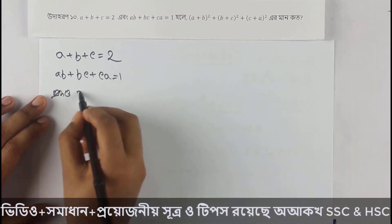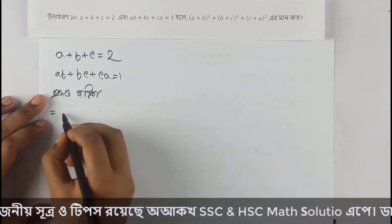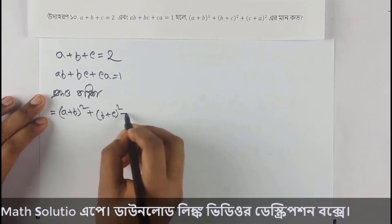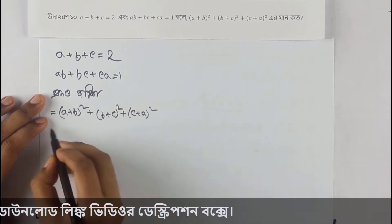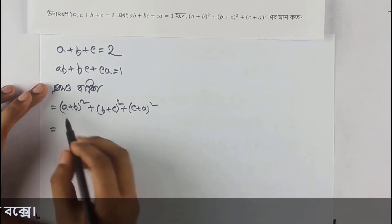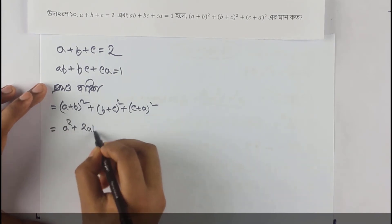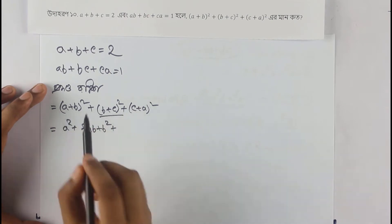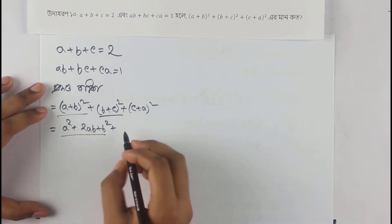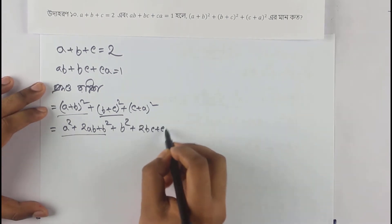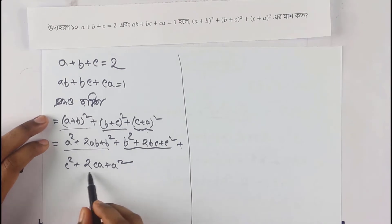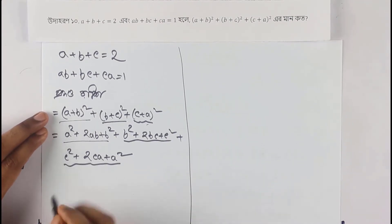The product of the terms: (a+b) whole square plus (b+c) whole square plus (c+a) whole square. Now expanding each: (a+b)² equals a² plus 2ab plus b². Then (b+c)² equals b² plus 2bc plus c². And (c+a)² equals c² plus 2ca plus a².